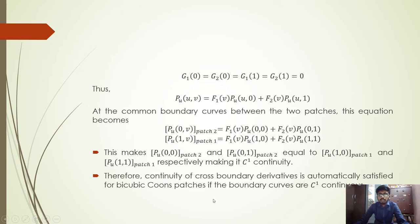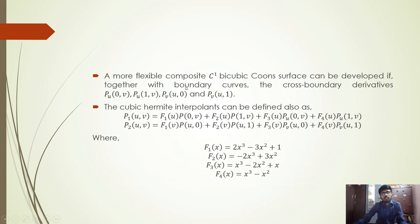Continuity of cross-boundary derivatives is automatically satisfied for the bicubic Coons patch if the boundary curves are C1 continuous. For a more flexible composite C1 bicubic Coons surface, together with boundary curves, the cross-boundary derivatives are also used. Using F₁(x), F₂(x), F₃(x), and F₄(x) as the four cubic Hermite functions, a more flexible C1 bicubic Coons surface can be obtained.